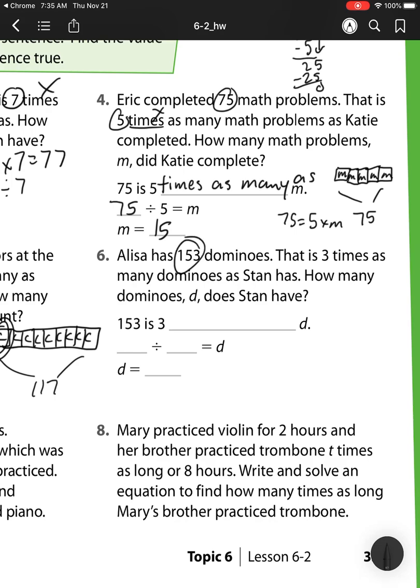Alisa has 153 dominoes. That is three times as many dominoes as Stan has. So again, we have this problem. So 153 is three times as many as d. And that's telling me that this mystery d is what Stan has. And Alisa has three times as many. So that means she would have three boxes. That's three times. Altogether, that's 153.